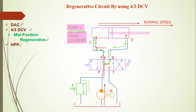In the reciprocating motion, when we return the circuit — during the return stroke — the piston moves to the left-hand side. At this time the regenerative circuit is not required, and the piston moves at normal speed. When both oil flows are directed into the double-acting cylinder together, it moves fast — that is the regenerative circuit.